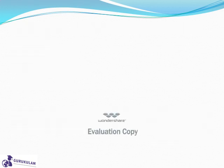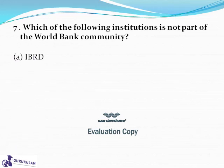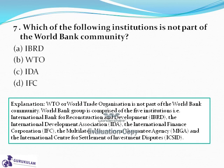Question 7: Which of the following institutions is not part of the World Bank Group? IBRD, WTO, IDA, or IFC. The answer is B — WTO (World Trade Organization) is not part of the World Bank Group. The World Bank Group is comprised of five institutions: IBRD, IDA, IFC, MIGA, and ICSID.